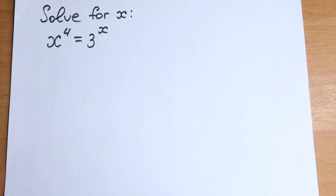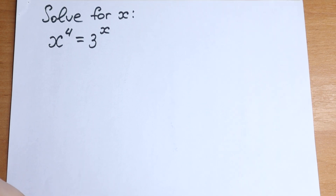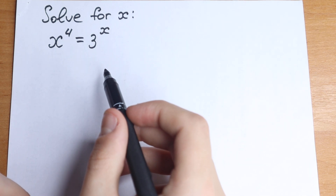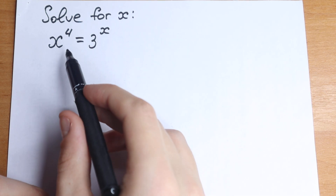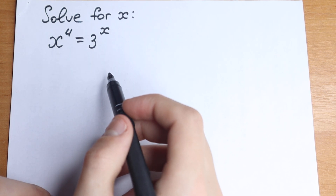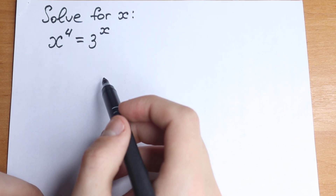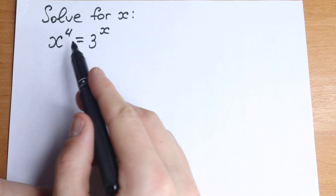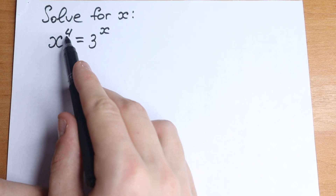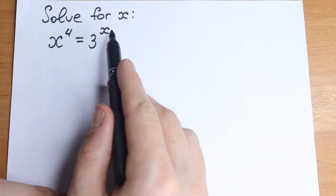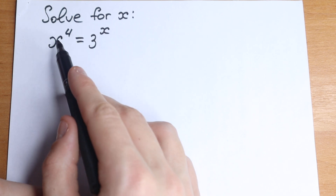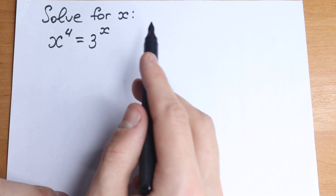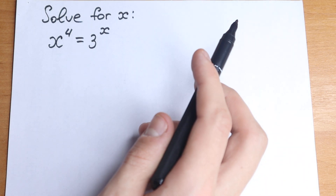Hello everyone! Happy to see you here. In this video we're going to solve a really interesting exponential equation. We have x to the 4th power equal to 3 to the x. On the first look this seems like a very easy exponential equation — we have only small numbers, just 4 and 3 with our x, so nothing hard. We have x to the 4th on the left hand side and 3 to the x on the right hand side.